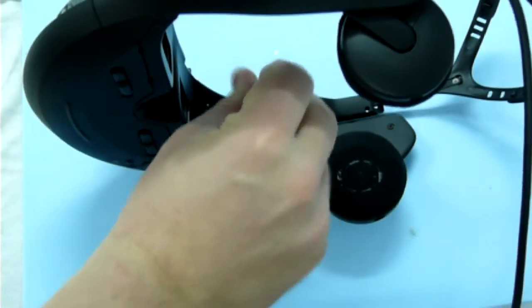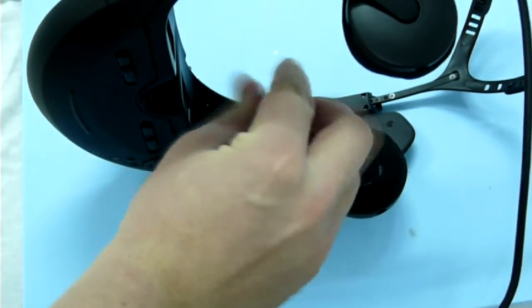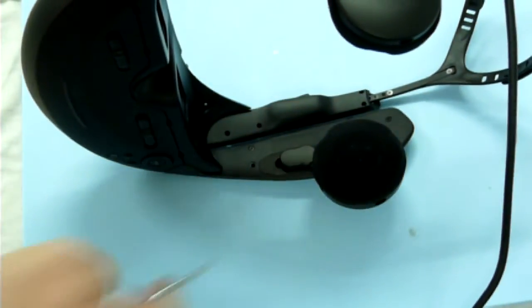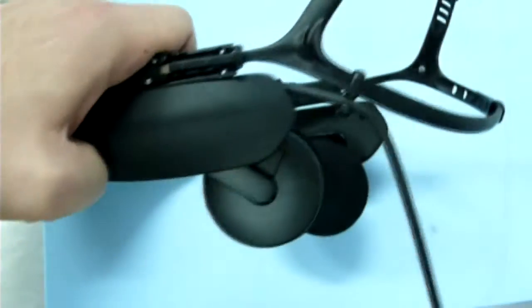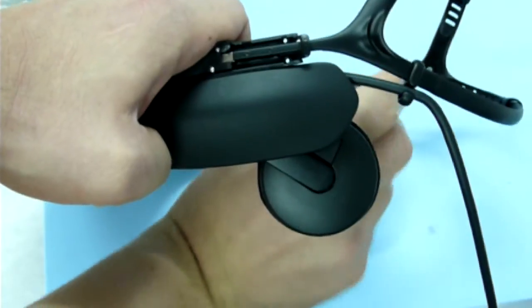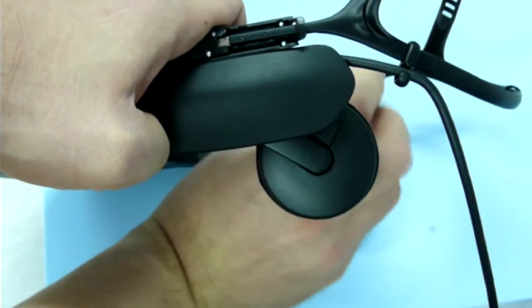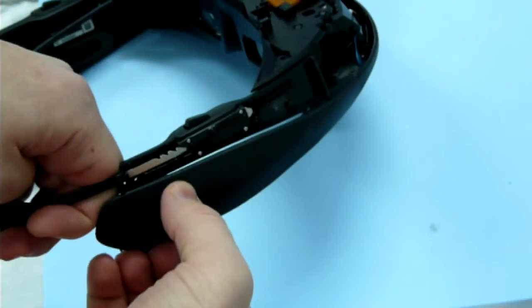Now, unscrew the side panels of the headphones. To remove one, gently pluck it with your fingernails.